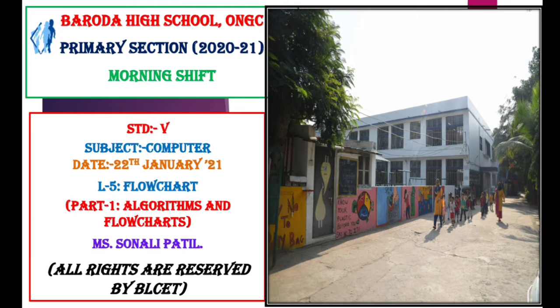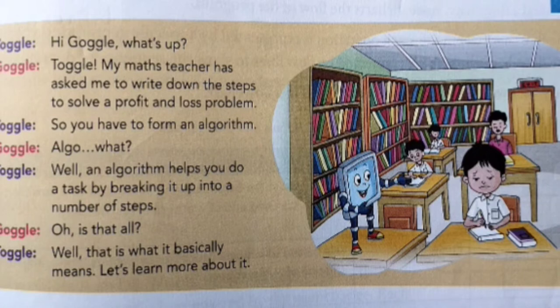In today's session, we will see what are algorithms and flowcharts. First, we will see what Tougal and Gogol say. Hi Gogol, what's up? Hi Tougal, my maths teacher has asked me to write down the steps to solve a profit and loss problem. So you have to form an algorithm. Algorithm? What is that? Well, an algorithm helps us to perform a task by breaking it up into a number of steps. Let us learn more about it.